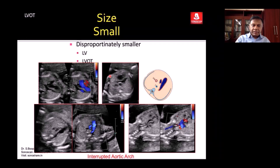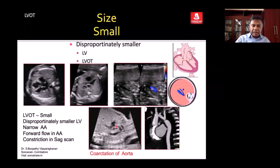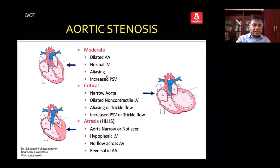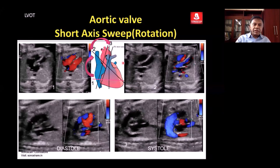A narrow LVOT with a dilated ventricle and smaller LVOT — when you look at the arch of the aorta it is discontinuous. On sagittal scan you see the ascending aorta continuing, and on a sagittal scan of the aortic arch you see narrowing, diagnostic of coarctation of the aorta. On color Doppler you see aliasing, and on spectral Doppler the velocity is increased above 100 cm/s — that is aortic stenosis. Critical aortic stenosis may occur where the aorta will be narrow with a normal left ventricle and increased velocity.